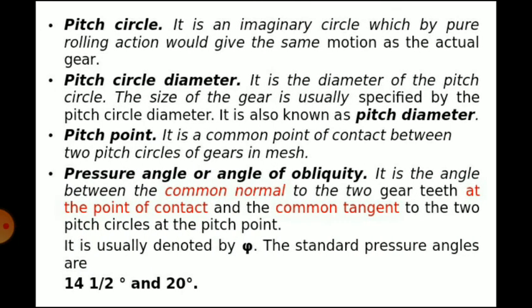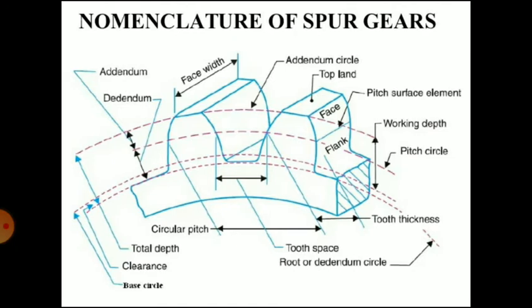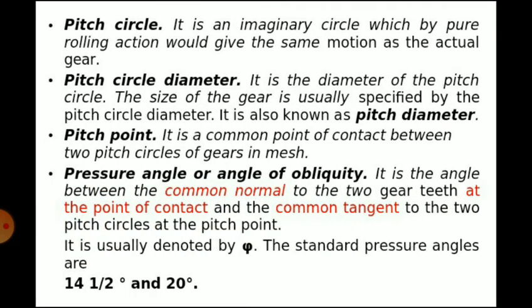The first element is pitch circle. It is an imaginary circle by which pure rolling action would give the same motion as the actual gear. In every pair of gears in mesh, the two circles representing the two plane wheels in contact are always assumed to exist — this is called the pitch circle. Pitch circle diameter is the diameter of the pitch circle; the size of the gear is usually specified by the pitch circle diameter, also known as pitch diameter.